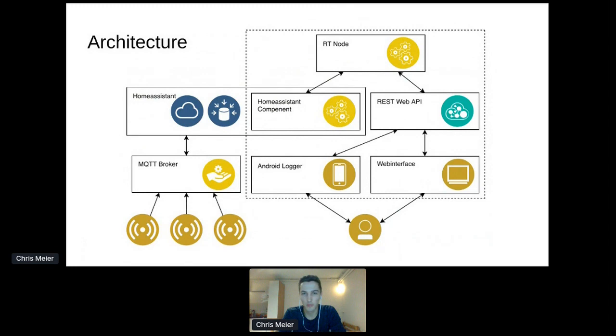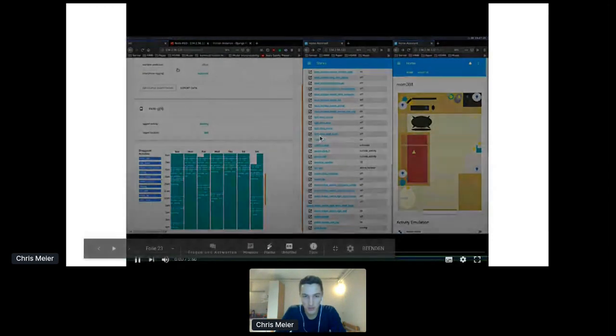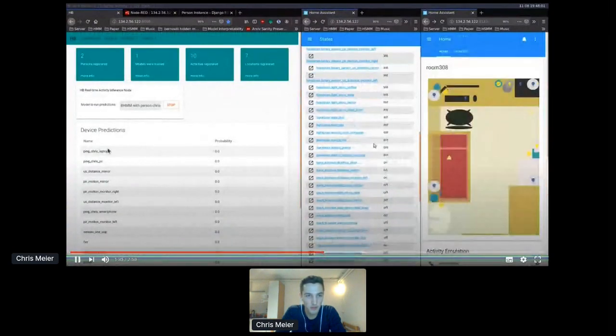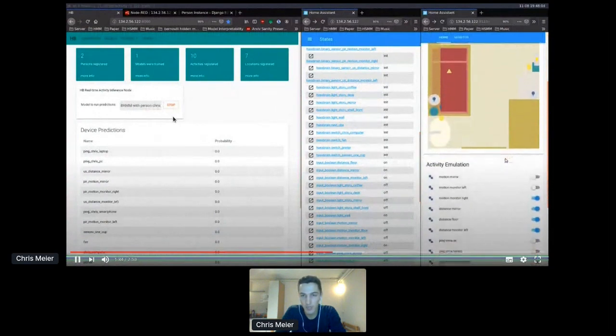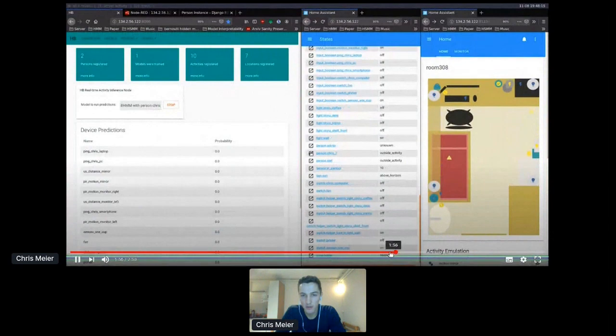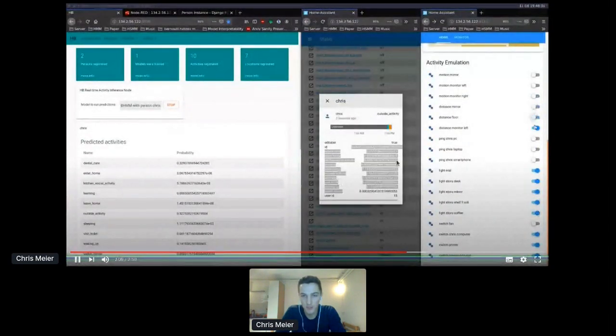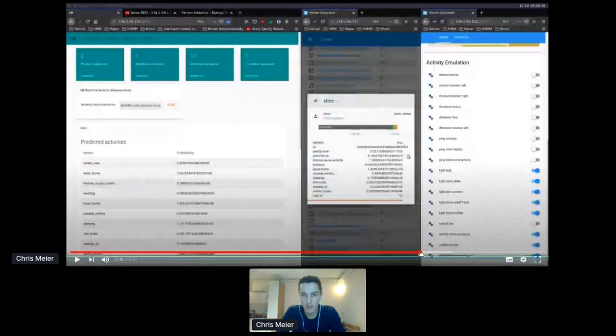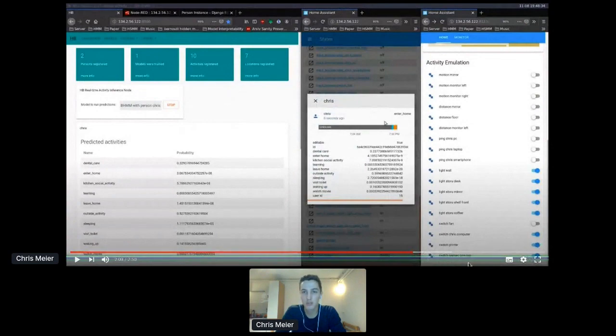And I have a video right here. So here I have started a model and here I have my person integration and we have activities and the corresponding probabilities of me performing that activity. If you paid close attention, the transitions between these probabilities were pretty inconsistent and seemed random. And it is because they are.